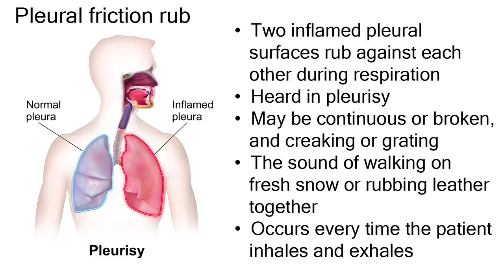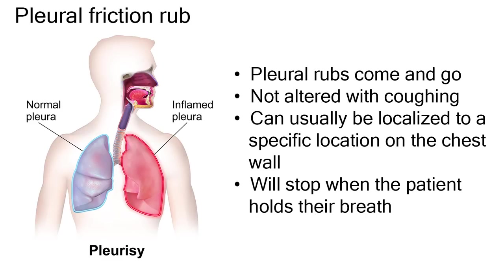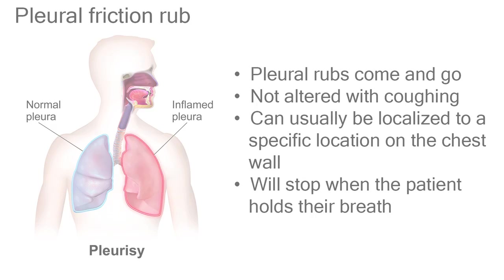The sound of pleural rubs occurs every time the patient inhales and exhales. Pleural rubs come and go, are not altered with coughing, can usually be localized to a specific location on the chest wall, and will stop when the patient holds their breath.